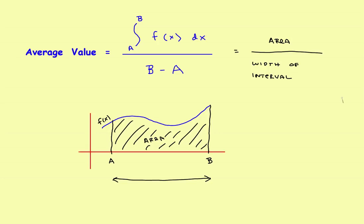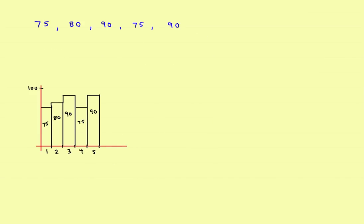It's kind of a two-step process. First, find the area, then divide by the width of the interval, and you'll have the average value. Let's take a look at a couple of examples. Before we start a calculus example, let's look at something you've been doing forever, to show how this works.